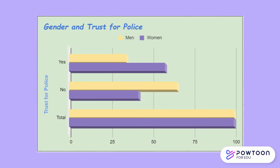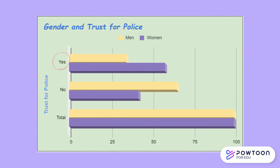So let's take our crosstab and present it in a bar chart form, as can be seen here. The purple codes for women and yellow for men. Now we can see the purple bar under category 'yes' is greater than the yellow, and this allows our audience to quickly and clearly interpret that women trust the police more.